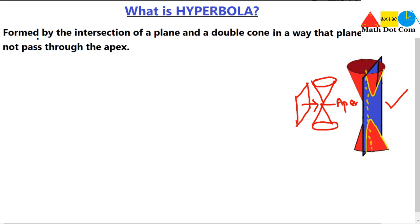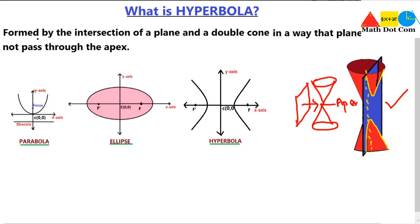The shape or section that we get from this intersection is a hyperbola, just like circle, ellipse, and parabola from previous lectures. Now let's discuss how hyperbola differs from the rest of the conics in its shape. If we draw them in the coordinate axis, we can clearly see how hyperbola differs from parabola and ellipse.